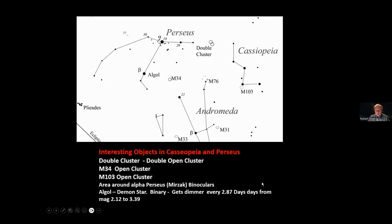Another thing that's easy to find here is M34, which is an open cluster. M103 is not quite as easy, but it's pretty easy. With binoculars, this area around Perseus is a very nice area with a lot of stars. Algol is the daemon star, and it gets dimmer every 2.87 days. So if you look at it, if it's as bright as this star, then you know it's not in eclipse. If it's as bright as right here, like these two stars, then it's in eclipse.